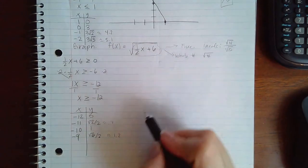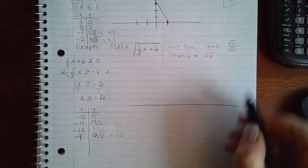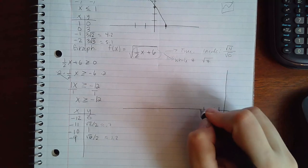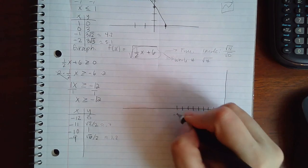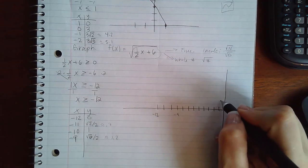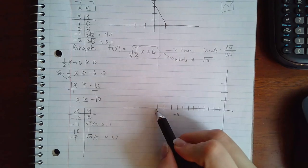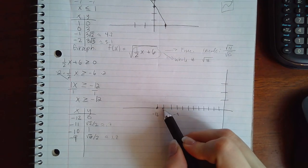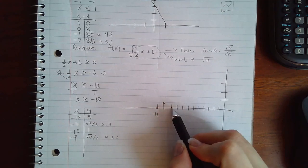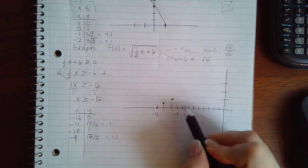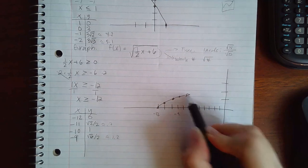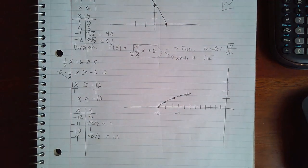Okay, so now let's try to graph this. So this is negative 12, which means I'm all the way over here. So we have negative 12 and 0, negative 11 and 0.7, so about there, negative 10 and 1, and then negative 9 and 1.2. So this one is looking like this, but it's way over here on the left hand side of the graph.